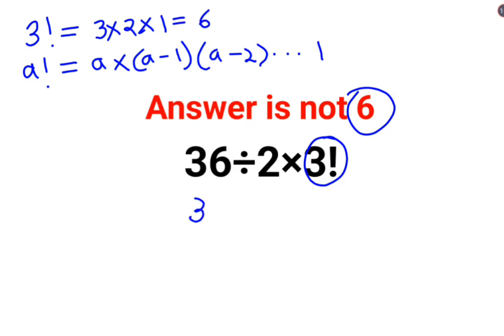So now your actual question is changed to 36 divided by 2 multiplied by 6. Now at this point, a lot of people think, let's do it this way: 36 divided by 2 multiplied by 6 is 12, so the answer is 3.